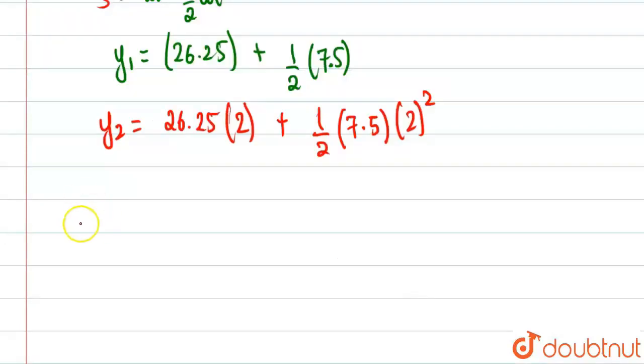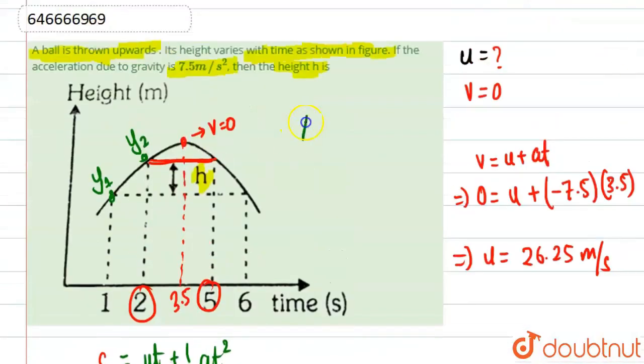So now what you have to do, if you check out y2 minus y1, which we have to find, which is equal to h, this will come out to be nothing but 15 meters. So basically this is our answer, our answer will be nothing but 15 meters.